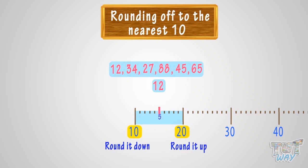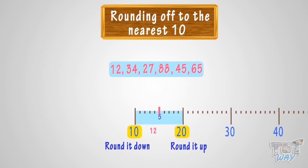Here is a rule to help you. We have a 5 mark midway between the two tens, always. If the number is above the 5 mark, you round it up. And if the number is below the 5 mark, you round it down. Here, 12 is below the 5 mark. Also, 12 is only 2 numbers away from 10, whereas it is 8 numbers away from 20. So we will round it down to 10.